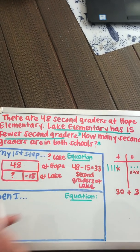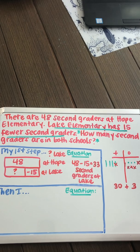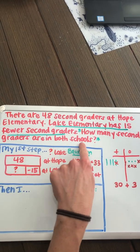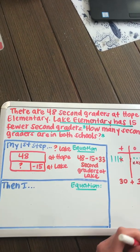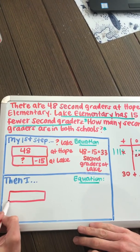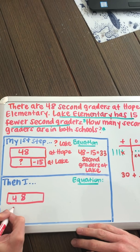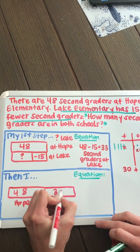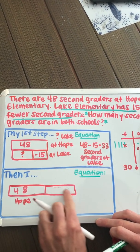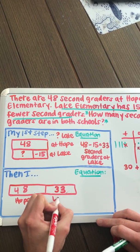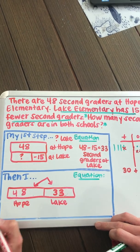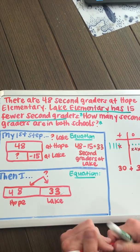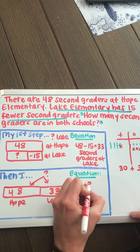Now it's time for step two. Let's go back to my final question: how many second graders are in both schools? I know I have 48 second graders at Hope, and I know that I have 33 second graders at Lake. I need to figure out how many total there are. If I'm combining, I know that I'm going to be adding. So my equation is going to be 48 plus 33.